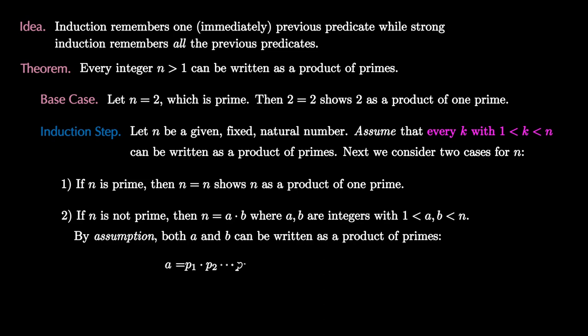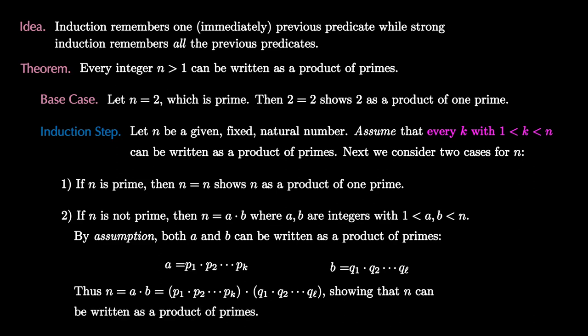This means that a equals p₁ times p₂ up to pₖ where they are primes, and b equals q₁ times q₂ up to qₗ where those are primes. But this means that n, which is a times b, is equal to p₁ up to pₖ multiplied by q₁ up to qₗ. This means that n can be written as the product of primes. Because we proved a base case and an induction step, we have proved the theorem by strong induction.